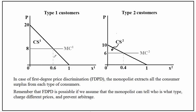Also notice that in first-degree price discrimination, both customers will be consuming the efficient quantity — the efficient coverage of the insurance. These numbers come from part 1. Recall that type 1 customer's efficient quantity is 0.6 and type 2 customer's efficient quantity is 0.4.